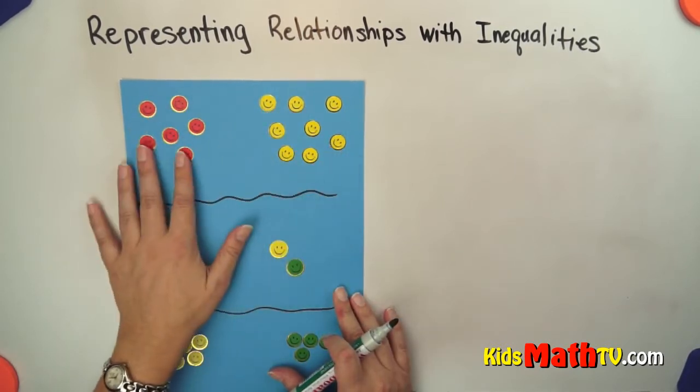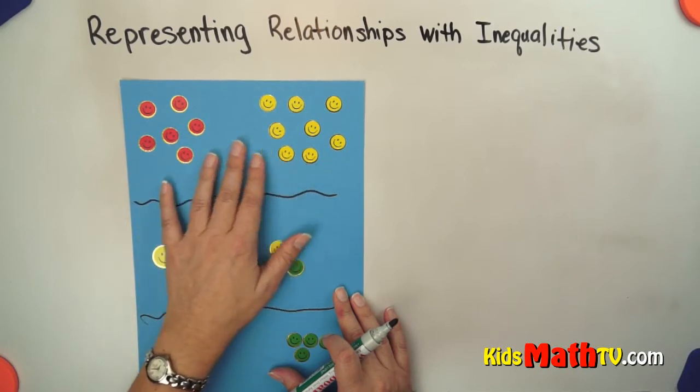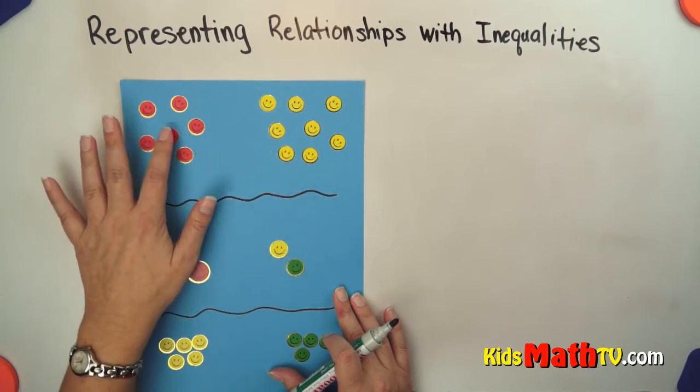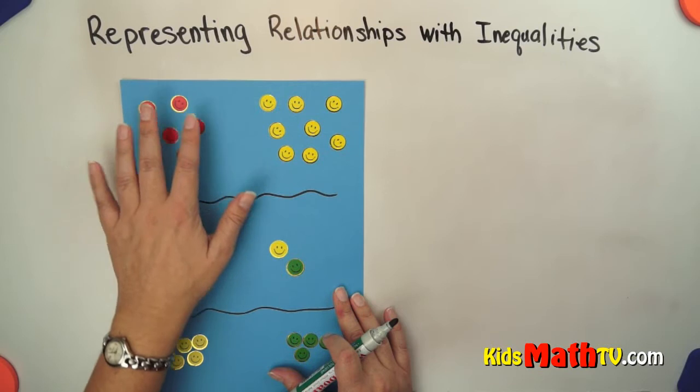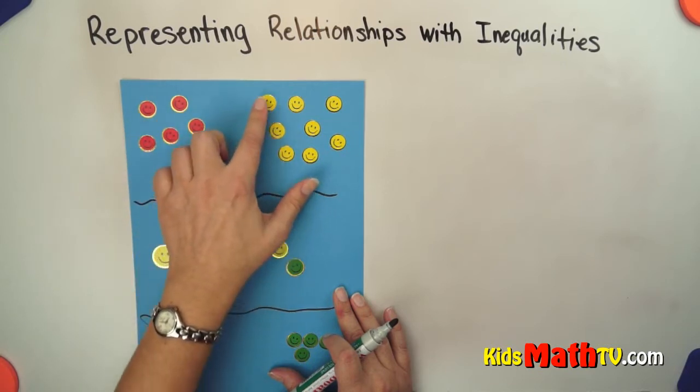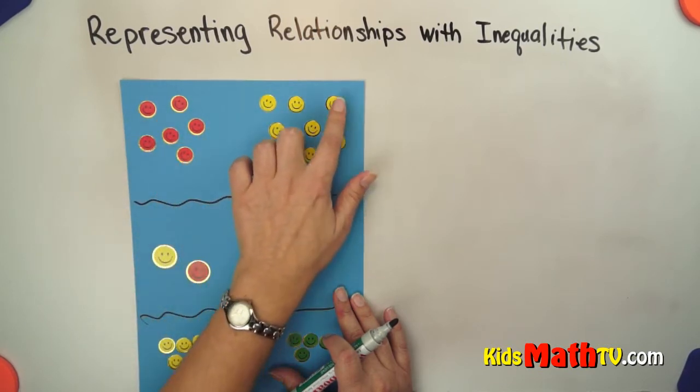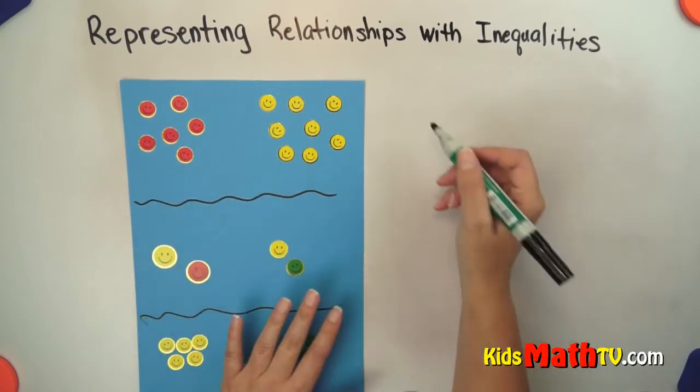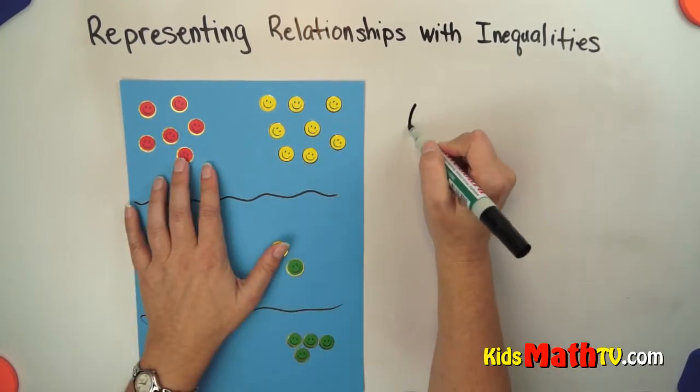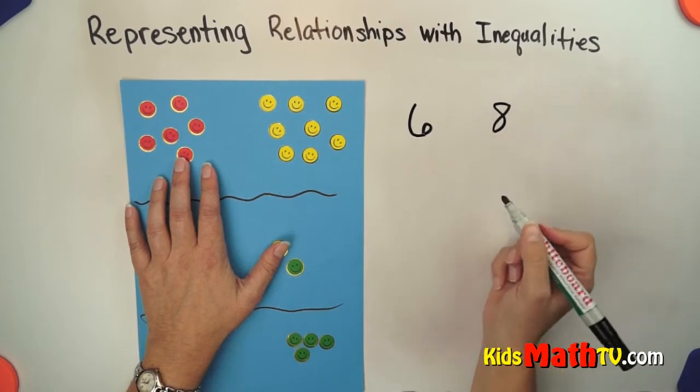If we look at this relationship, we have some smiley faces here. Over here I count 1, 2, 3, 4, 5, 6 smiley faces. And over here I count 1, 2, 3, 4, 5, 6, 7, 8 smiley faces. So we have this relationship between 6 smiley faces and 8 smiley faces.